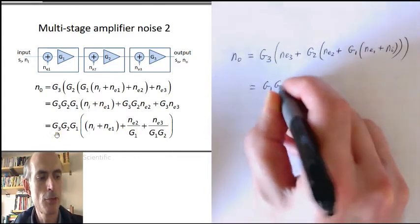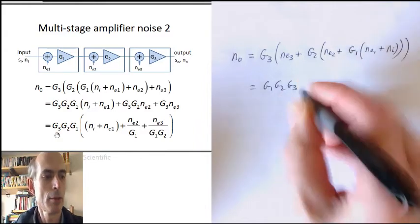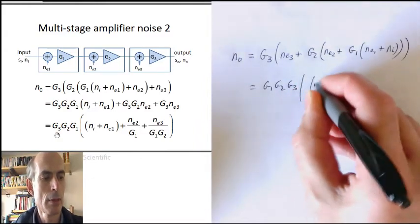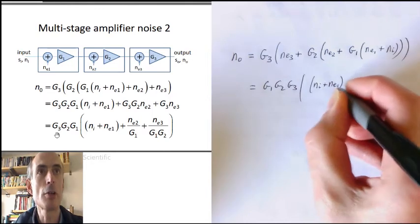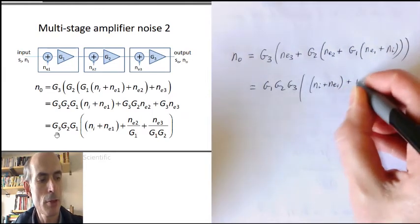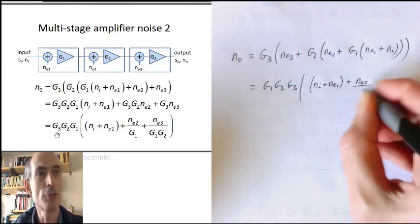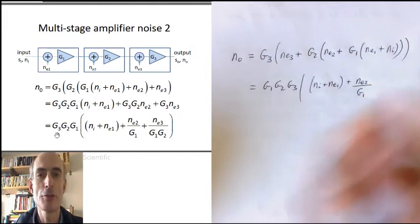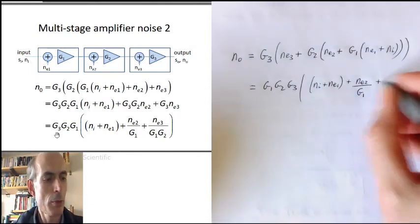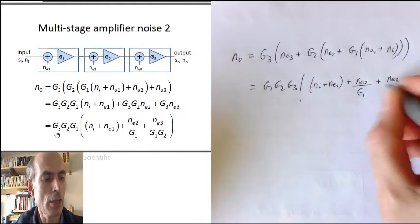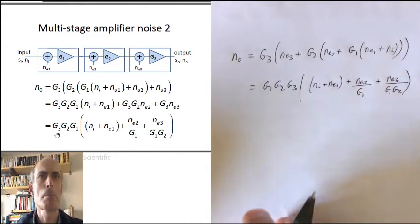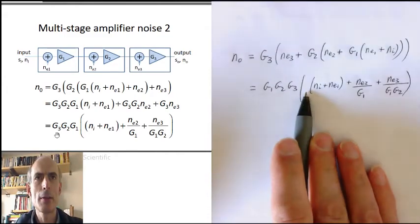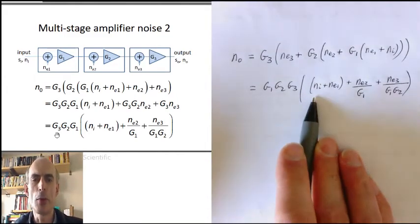G1, G2, G3 times the input noise plus the equivalent input noise to the first stage, plus the equivalent input noise to the second stage, divided by the gain of the first stage, plus the equivalent input noise to the third stage, divided by the gain of the first two stages taken together. And that turns out to be quite an interesting way to write it.